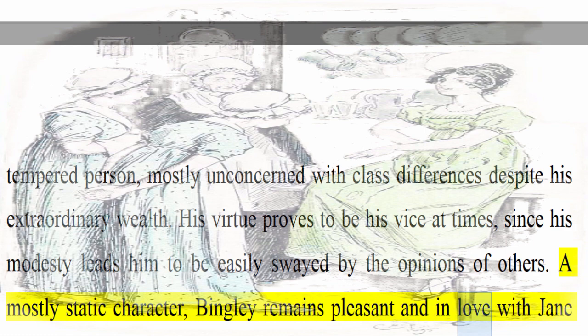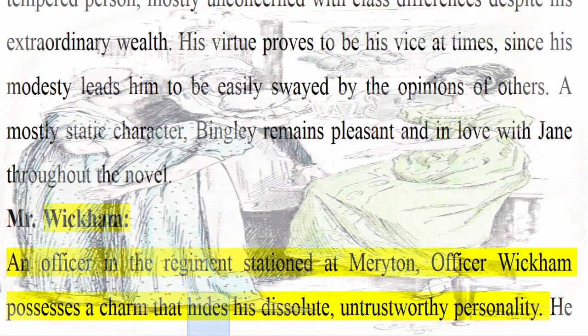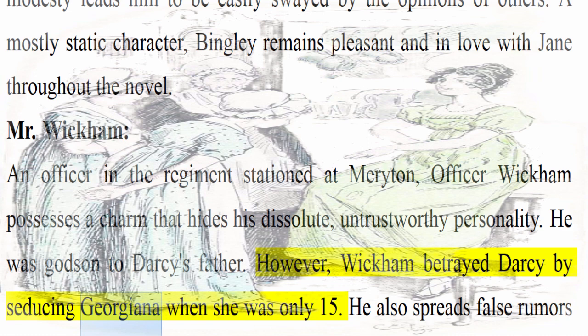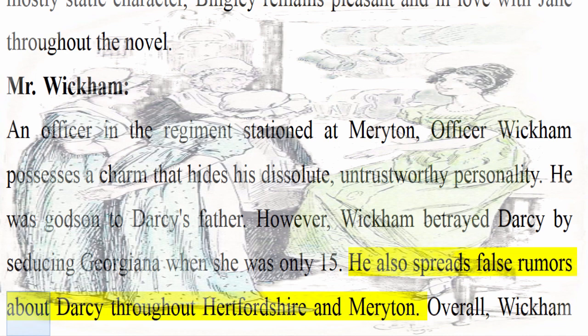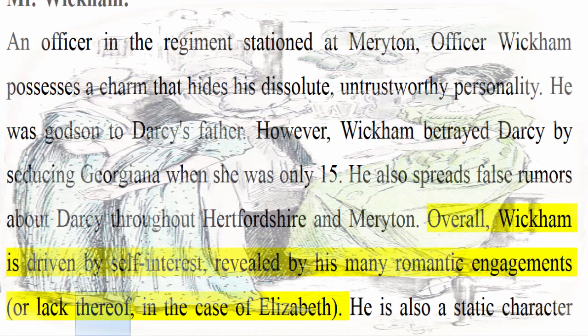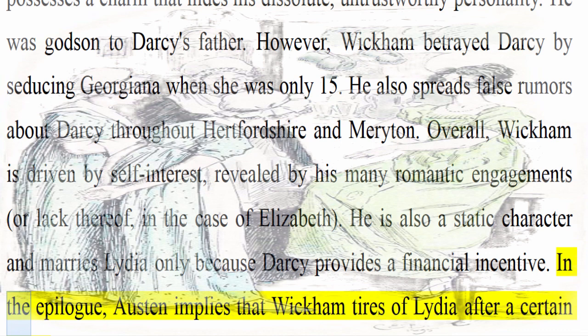Mr. Wickham: An officer in the regiment stationed at Merriton, Wickham possesses a charm that hides his dissolute, untrustworthy personality. He was godson to Darcy's father. However, Wickham betrayed Darcy by seducing Georgiana when she was only 15. He also spreads false rumors about Darcy throughout Hertfordshire and Merriton. Overall, Wickham is driven by self-interest, revealed by his many romantic engagements. He is a static character and marries Lydia only because Darcy provides a financial incentive. In the epilogue, Austen implies that Wickham tires of Lydia after a certain point.